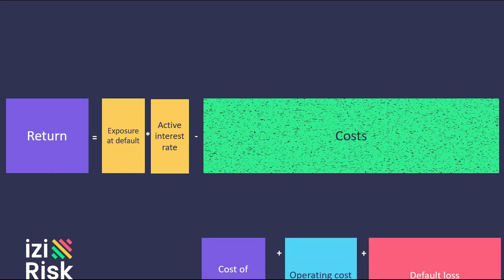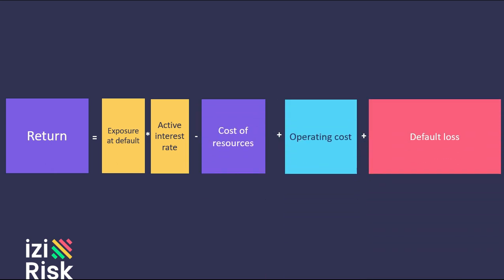The costs are made up of three elements: the financial cost, the operating cost, and the default loss. The financial cost refers to how much the borrowed resources cost. This is obtained by multiplying the resources used by each operation by the level of indebtedness or leverage that the entity possesses.